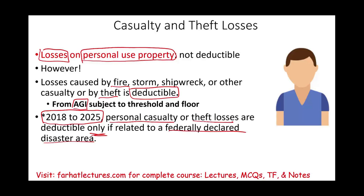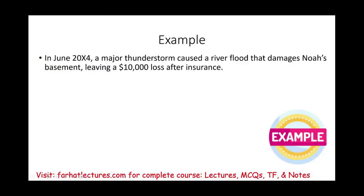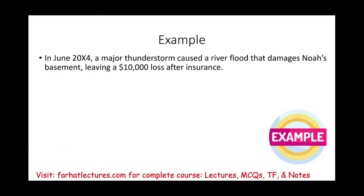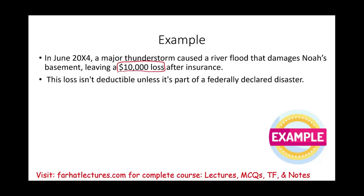We're going to have to learn about casualty and theft losses because they'll be deductible again fairly soon. Let's assume in June 20X4, a major thunderstorm caused river flood damage to Noah's basement, leaving a $10,000 loss after insurance. This loss is not deductible, assuming the property is personal use and the event was not a federally declared disaster.